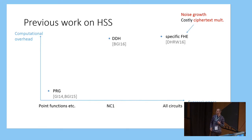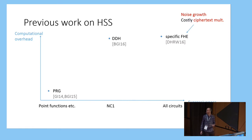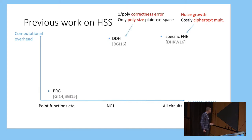At Crypto 2016, Boyle, Gabor, and Ishai presented a very exciting work which constructed homomorphic secret sharing based on just the DDH assumption for log depth circuits. This was a really amazing feasibility result because it managed to avoid using fully homomorphic encryption for what's actually a very expressive class of functions.